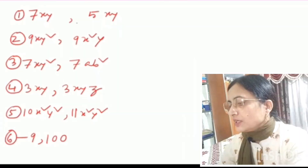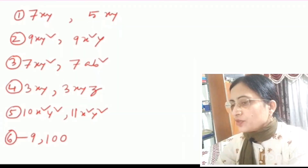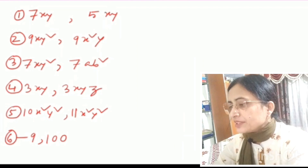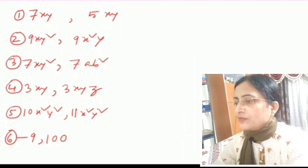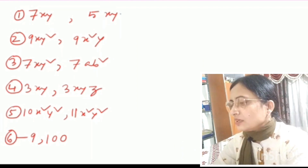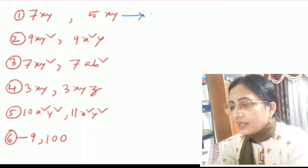Let's explain with some examples. In number one, 7x and 5xy — wait, both terms have the same variables x and y, and the power of each variable in both terms is 1, so these are like terms.